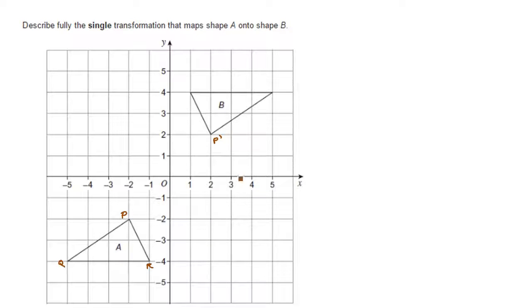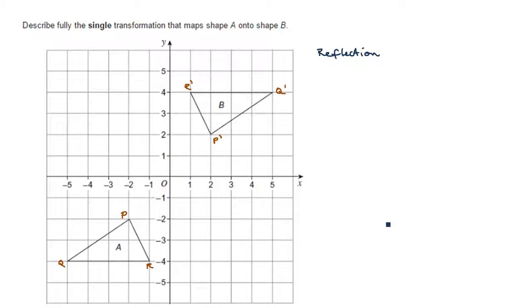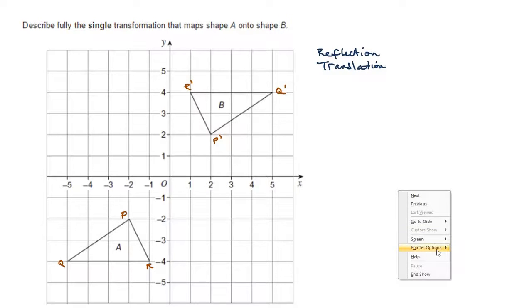P prime, Q prime must be this acute angle here, and R prime must be over here. I can immediately eliminate something because I can see straight away that these vertices are in an anti-clockwise direction. If they were in a clockwise direction — going PQR — I would be thinking in terms of reflection. But because that's not the case, we can immediately eliminate reflection. I can also eliminate translation because the orientation isn't the same — translation simply shifts the plane, so the object would be the other way up.